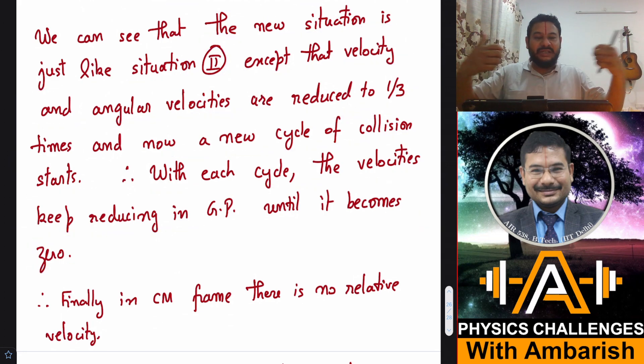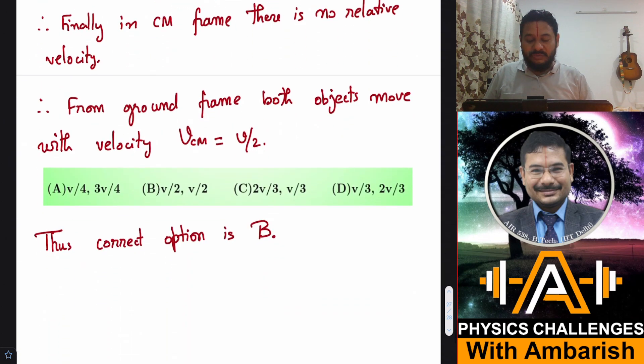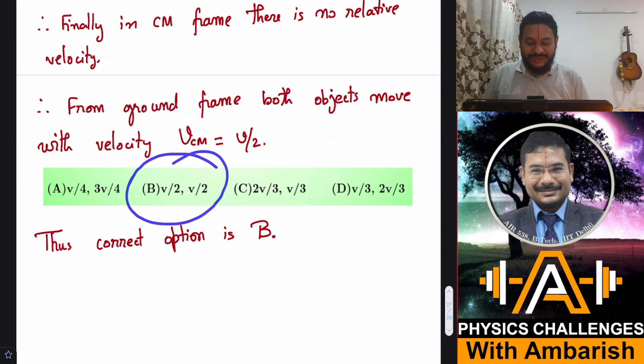So finally in the center of mass frame, they keep colliding and then finally they come to rest with respect to each other. And then what is left in the system? From the ground frame, the velocity of center of mass is left. So finally in the center of mass frame there is no relative velocity, and all we are left from ground frame is the velocity of the center of mass. That's all. So from ground frame, both objects move with the velocity v_cm equals v/2. So the correct option is B. Some of you did give the correct answer. I hope you used the correct reasoning as well.